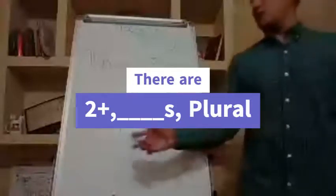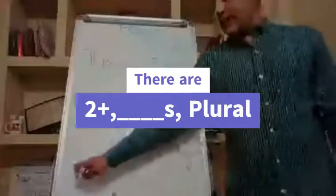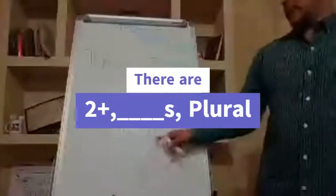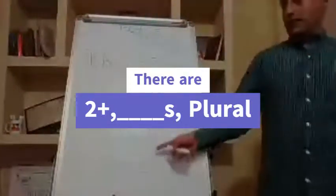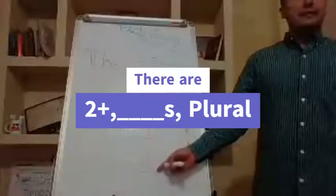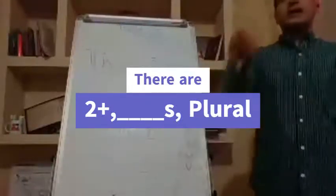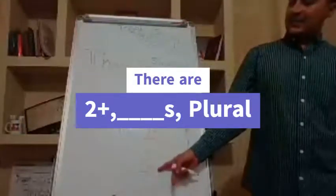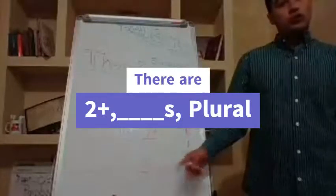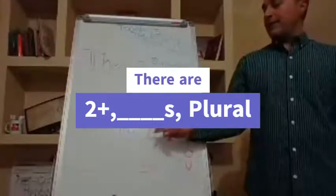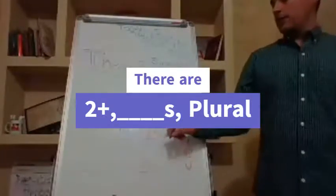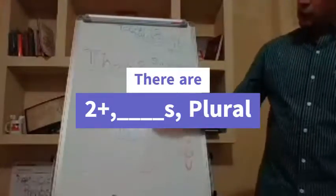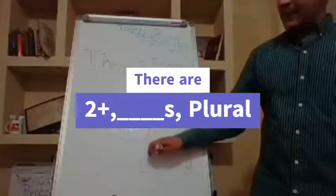Y qué le tienes que poner a student? Student. Student. Y lleva la S. Student. Porque son dos. Estos van a llevar la S. There are two cell phones. Cell phone. Sss. Cell phones. Good. Van a llevar. Van a llevar. There are. Y. Más de dos. Y necesitas la S. Porque es plural.